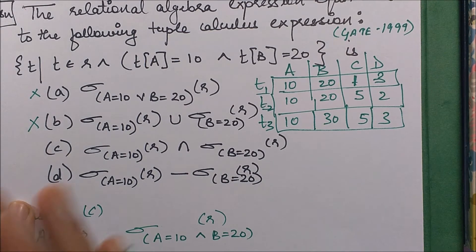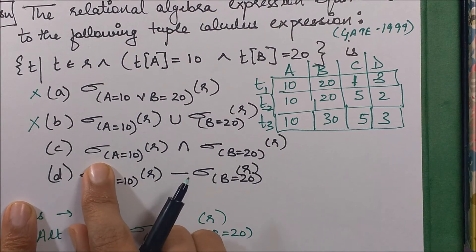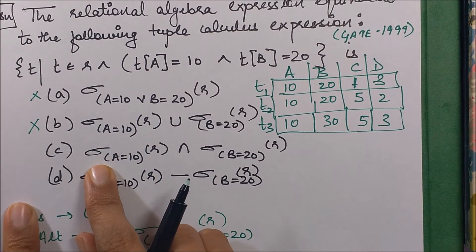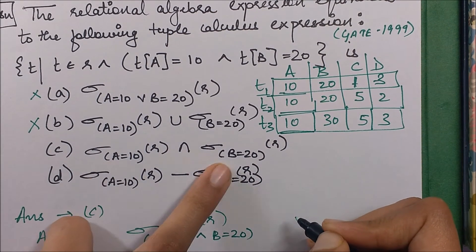Now let's check this C option. What it says is: a equals 10 selects 1, 2, 3, all these three rows. Then b equals 20, only these two.